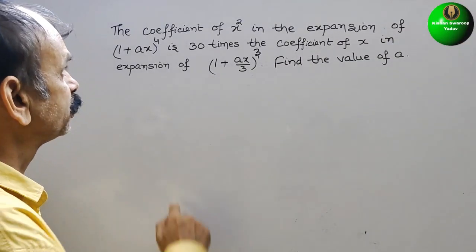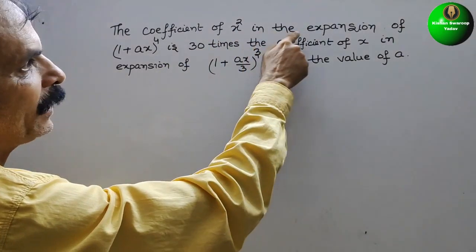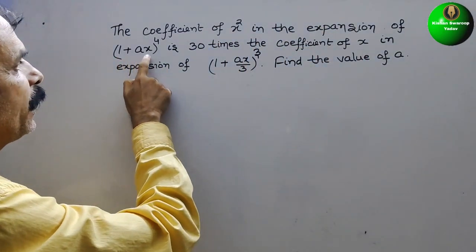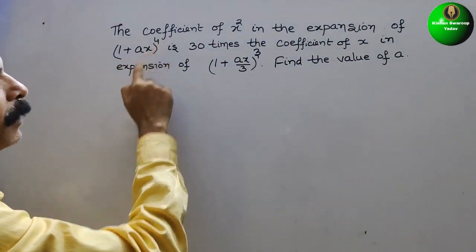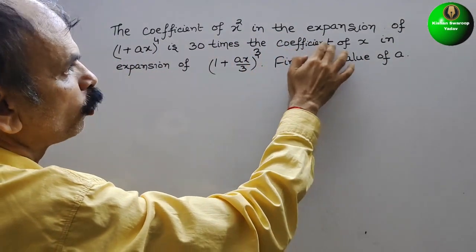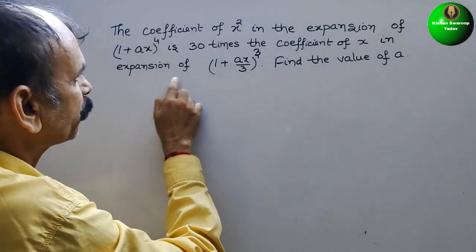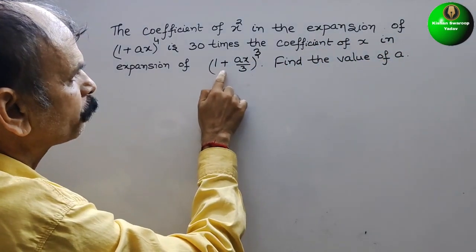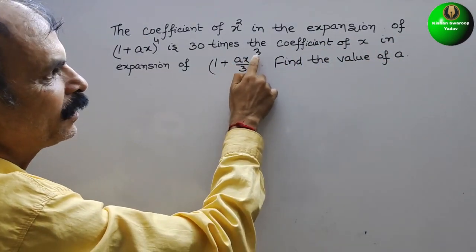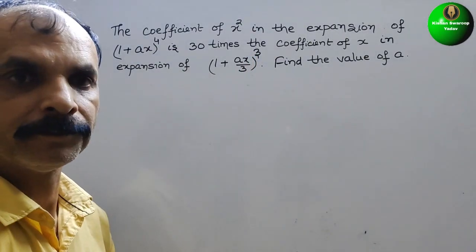Your question is: the coefficient of x squared in the expansion of (1 + ax)⁴ is 30 times the coefficient of x in the expansion of (1 + ax/3)³. Find the value of a.